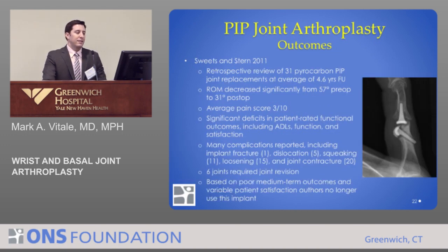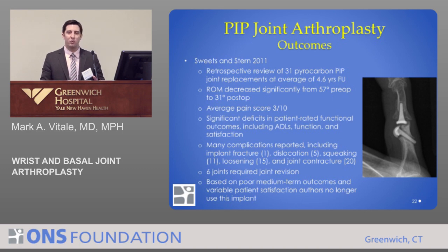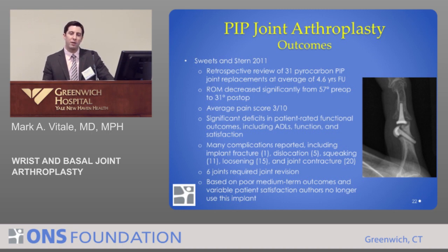More recently, Dr. Stern reported the longest outcome data for PIP pyrocarbon arthroplasty — an average of 4.6 years of follow-up in 2011 — and the results were less encouraging. Pain still persisted in some patients, range of motion was actually less post-operatively than pre-operatively, and there were many complications including implant fracture, dislocation, squeaky joints, loosening, and joint contracture. Six joints required revision, and based on these poor medium-term results, the authors no longer use this implant.